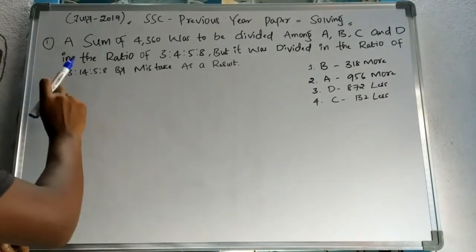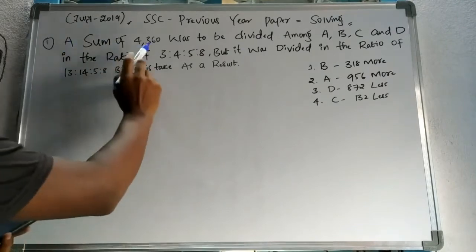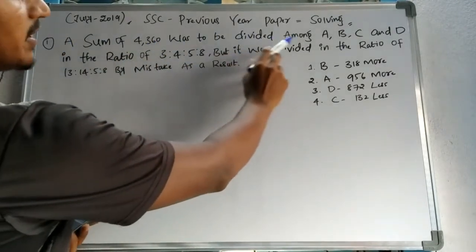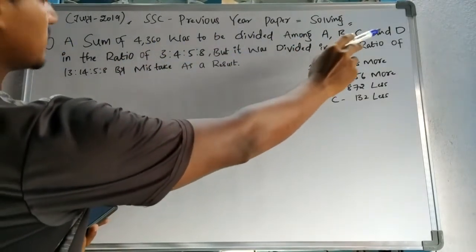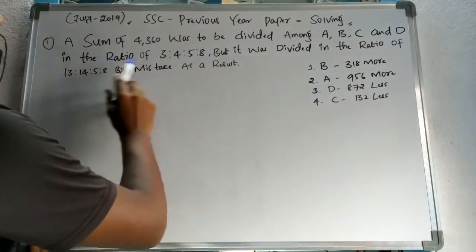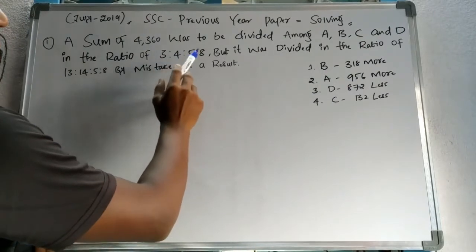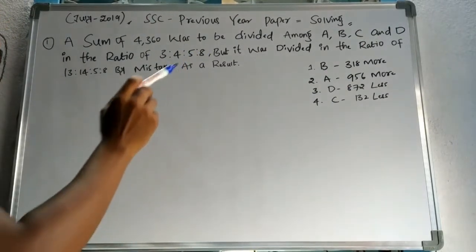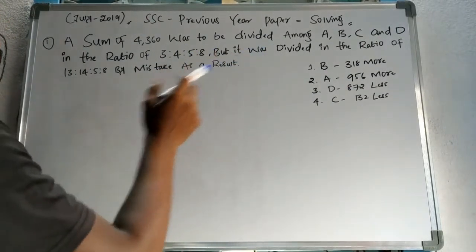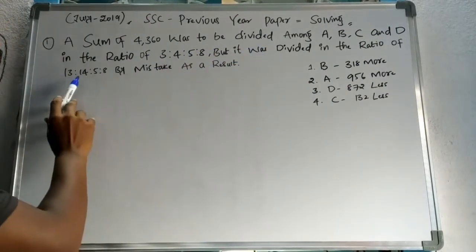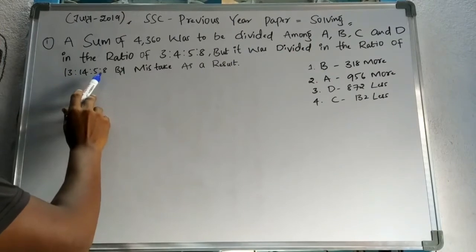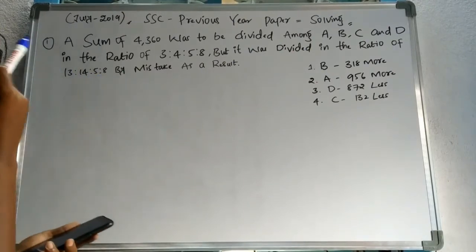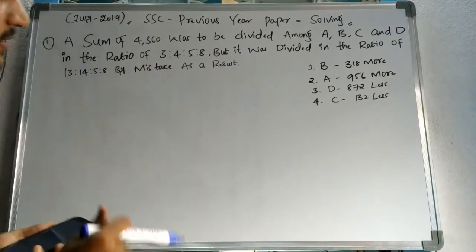Problem number 1. A sum of 4,360 rupees will be divided among A, B, C, D in the ratio of 3:4:5:8. But it was divided in the ratio of 13:14:5:8 by mistake. As a result...